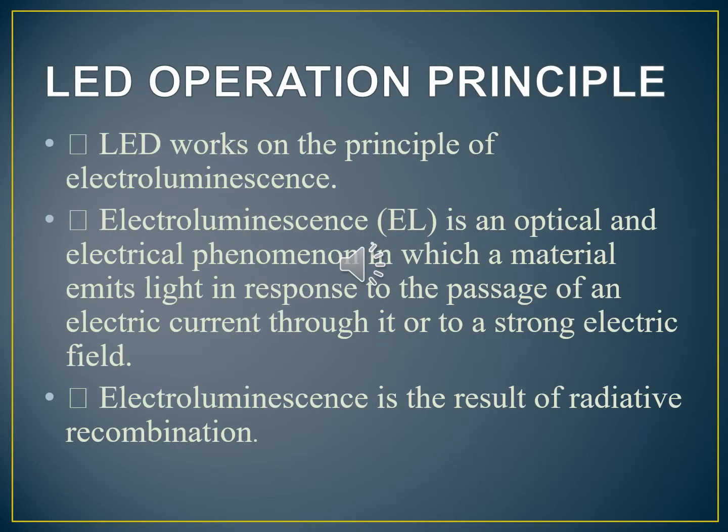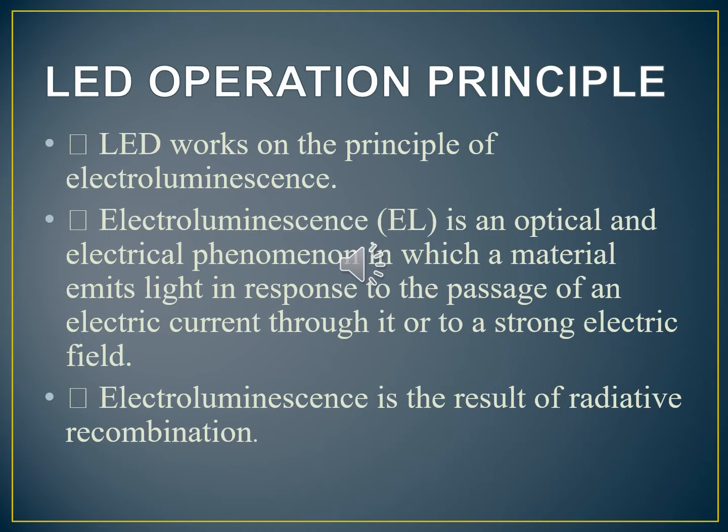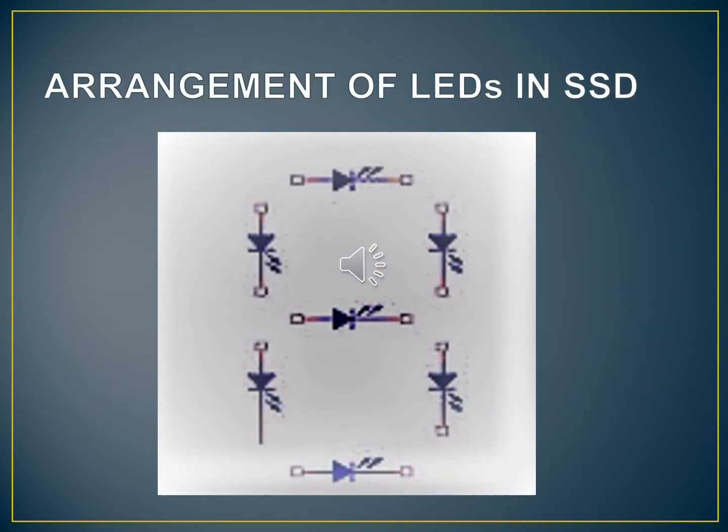So let's see the LED operation principle. LED works on the principle of electroluminescence. Electroluminescence is an optical and electrical phenomenon in which a material emits light in response to the passage of electric current through it or to a strong electric field. It's the result of radiative recombination. This is how LEDs are arranged in seven segment display. These LEDs will glow only when this LED is forward biased.